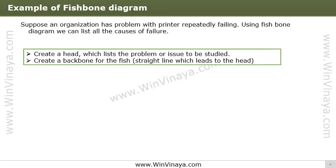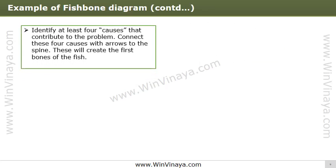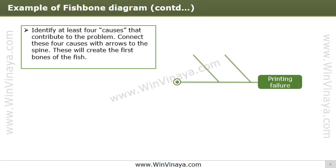Let's take an example to understand the fishbone diagram better. Suppose an organization has a problem with printing which repeatedly fails. We'll examine this by brainstorming all possible causes and using a fishbone diagram to arrive at the root cause. Begin by creating a head listing the problem, then draw the backbone — a straight line leading to the head. Identify at least three or four causes that contribute to the problem and connect them with arrows to the spine.